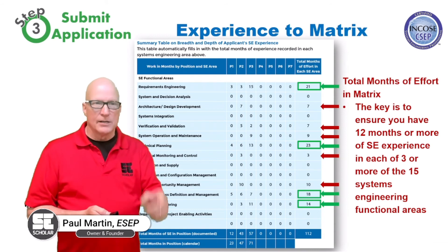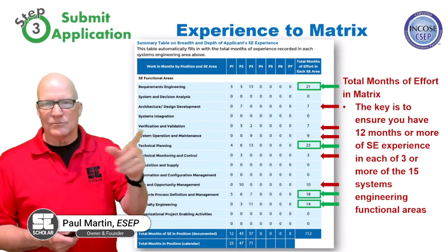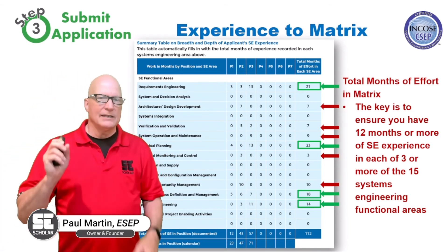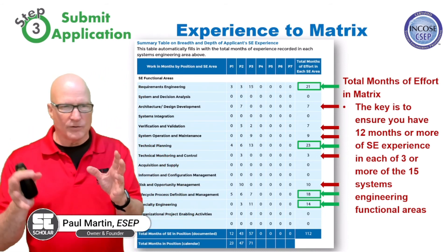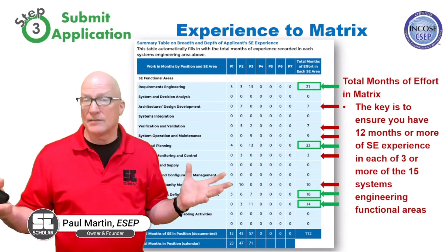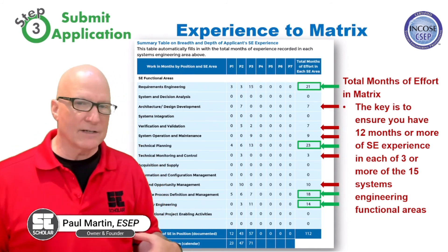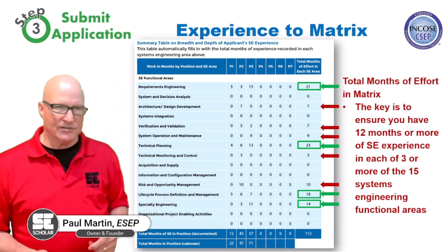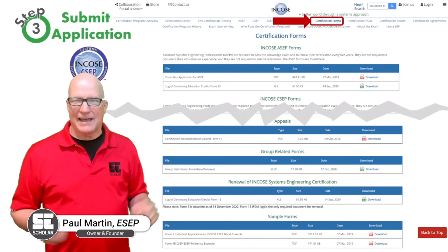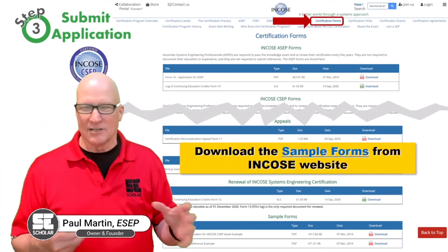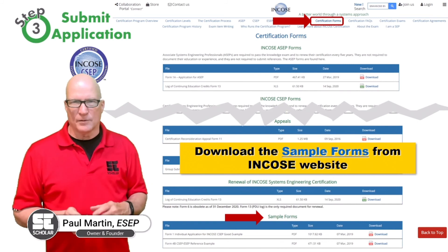For each position, you calculate how much time you spent on each functional area. What they're looking for in the last column is 12 months or more in at least three of those functional areas. For example, having 12 or more months in four functional areas meets the criteria, as does having more than 60 total months of experience. It gets slightly complicated, but fortunately INCOSE provides sample forms that have been filled out so you can study how they did it — you can download those from the website.